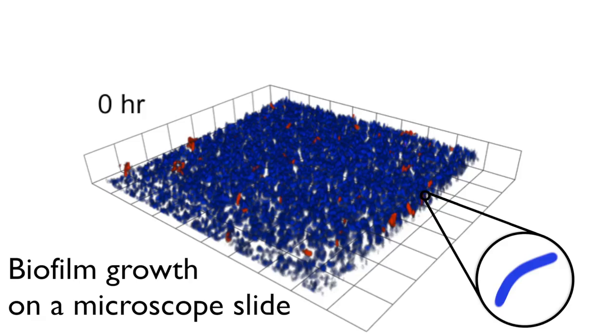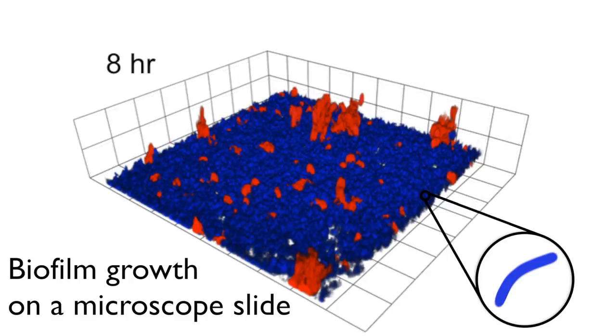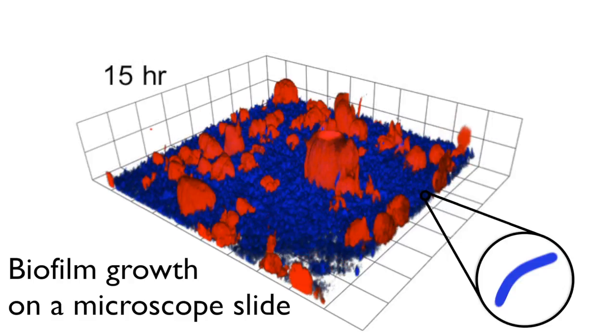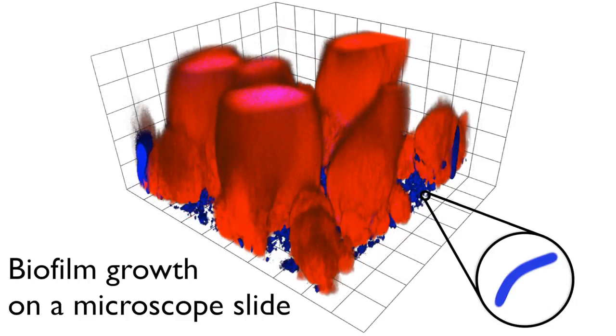For example, biofilm formation is controlled by chemical communication. A biofilm is a large community of many cells, so only if many cells are present together do the bacteria initiate biofilm formation. That's controlled by this chemical communication process that we call quorum sensing.